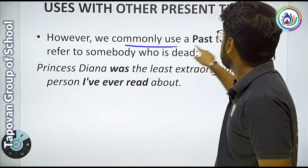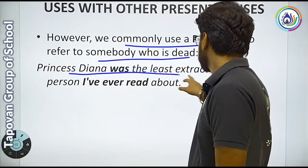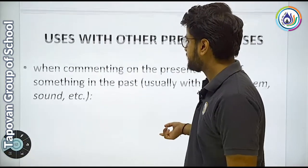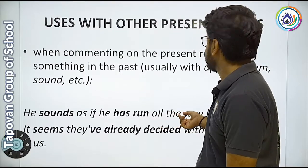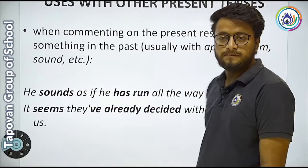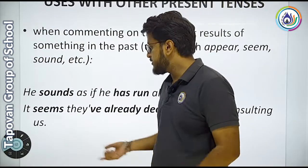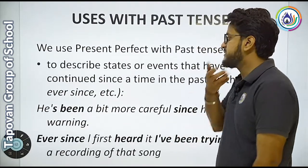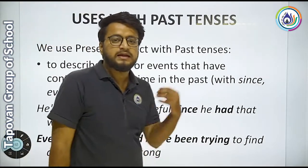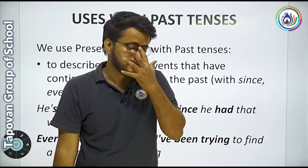We commonly use a past tense to refer to somebody who is dead. जो dead है उसको हम past tense refer करते हैं. Example: Princess Rihanna was the most extraordinary person I have ever read about. When commenting on the present results of something in the past — usually with appear, seem, sound, etc. Example: Sounds as if he ran all the way here. It seems they have already decided without consulting us. We use present perfect with past tense to describe states or events — past में occur हुए events और states को, जो perfect tense में भी गिने जाते हैं.